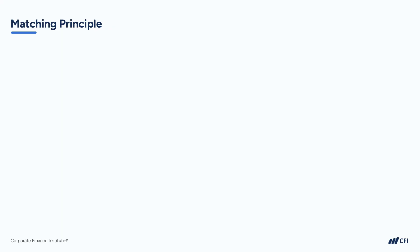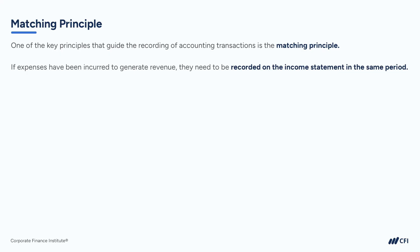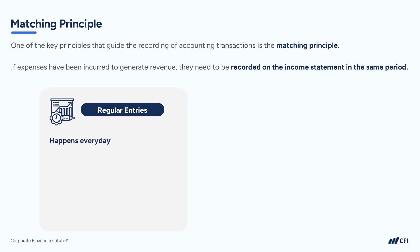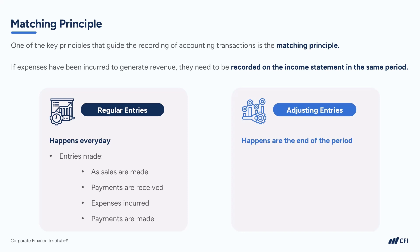When it comes to accounting, there's a really important concept called the matching principle. Basically, if a company spends money to make money, that spending needs to be recorded at the same time as the revenue it generates. There are two different kinds of entries that accountants make. The first type are regular entries that happen all the time, like recording sales, receiving a payment, or paying a cash expense.